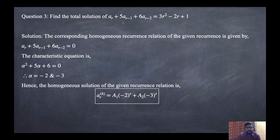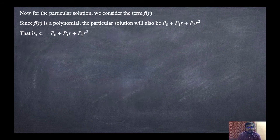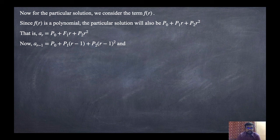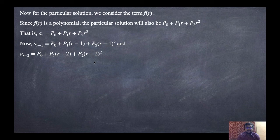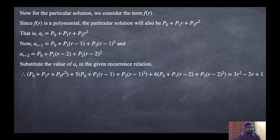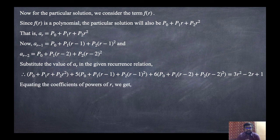The terms in the question are AR, AR-1, and AR-2. For AR-1, replace R by R minus 1: P0 plus P1·(R-1) plus P2·(R-1)². For AR-2, replace R by R minus 2: P0 plus P1·(R-2) plus P2·(R-2)². Substituting all values into the recurrence relation and equating coefficients of R², R, and constant terms.